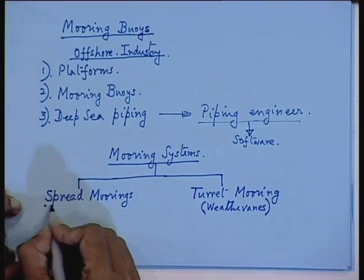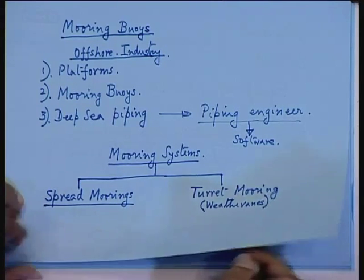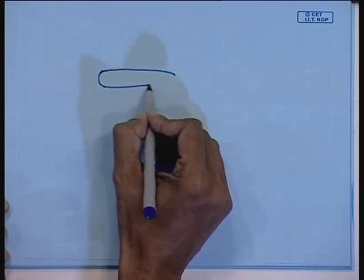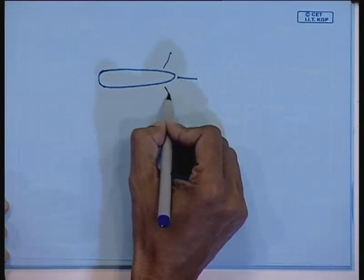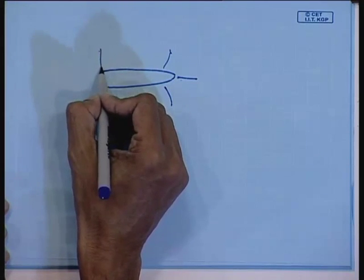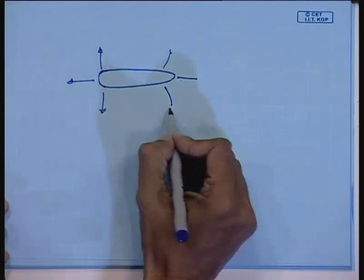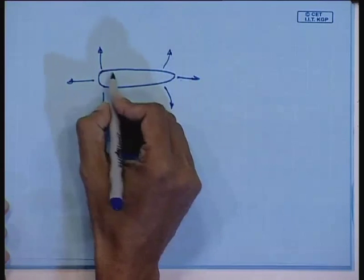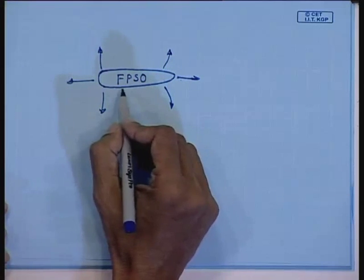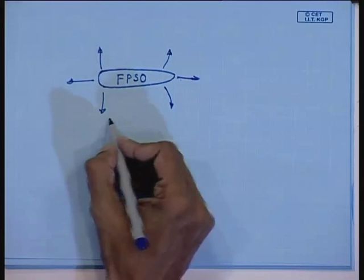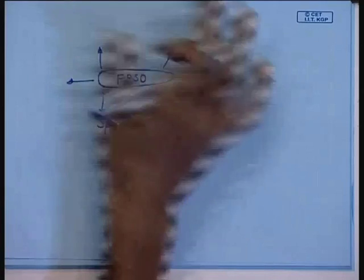A semi-submersible may have as much as 8 kilometers of mooring chains. In a spread mooring system — viewed from the top on an FPSO — you have mooring chains at the front and at the stern connected by wires or chains to anchors. FPSO stands for Floating Production Storage and Offloading. In a spread mooring system, the mooring wires are spread around the ship.